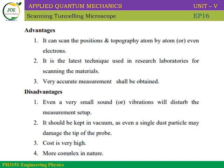Advantages: In recent days, technology is advancing in nanotechnology. Device sizes are very small, involving thin films and nanosystems. We need to fabricate and analyze crystals and substrates at the atomic scale. Using the scanning tunneling microscope as a surface analysis tool, we can see the position and topography of atoms — and even electrons — with very high accuracy. It is the latest technique used in research laboratories.